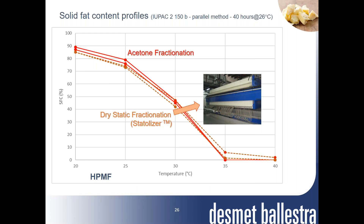This slide shows solid fat content profiles using the IUPAC parallel-tempered method of the same hard palm mid fractions. The solid lines correspond to two hard palm mid fractions obtained from acetone fractionation, and the dotted lines to those obtained by static dry fractionation. The profiles are very similar with a steep decrease between 25 and 35°C. However, due to slightly different compositional properties, the solid fat content profiles are slightly lower at 30°C and higher at 35°C for the dry hard palm mid fraction.